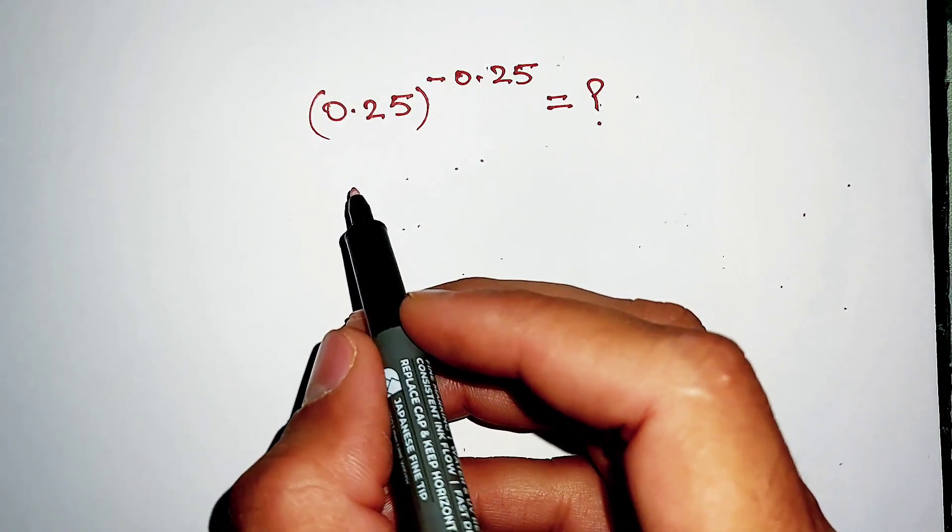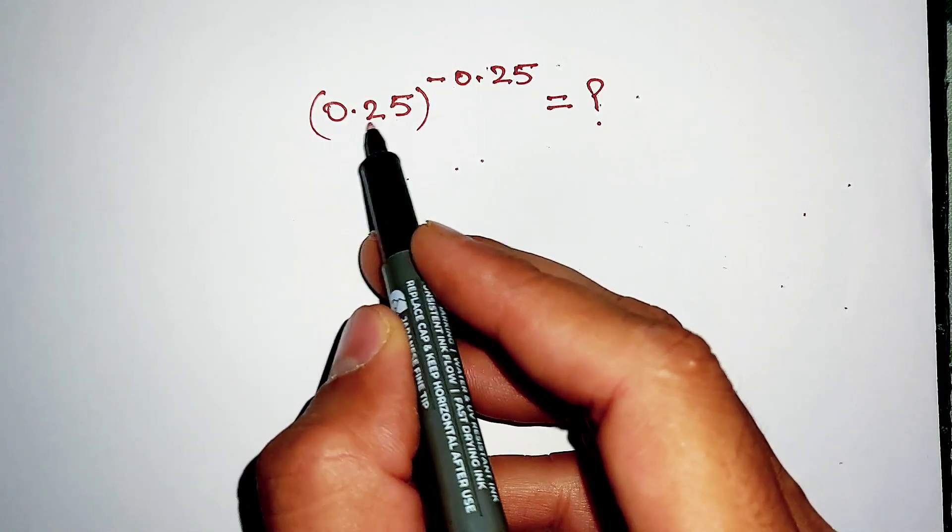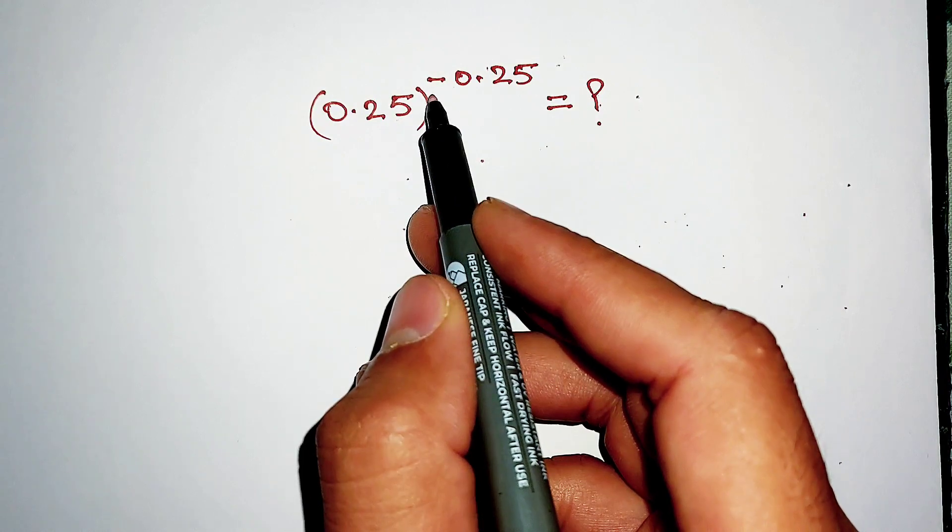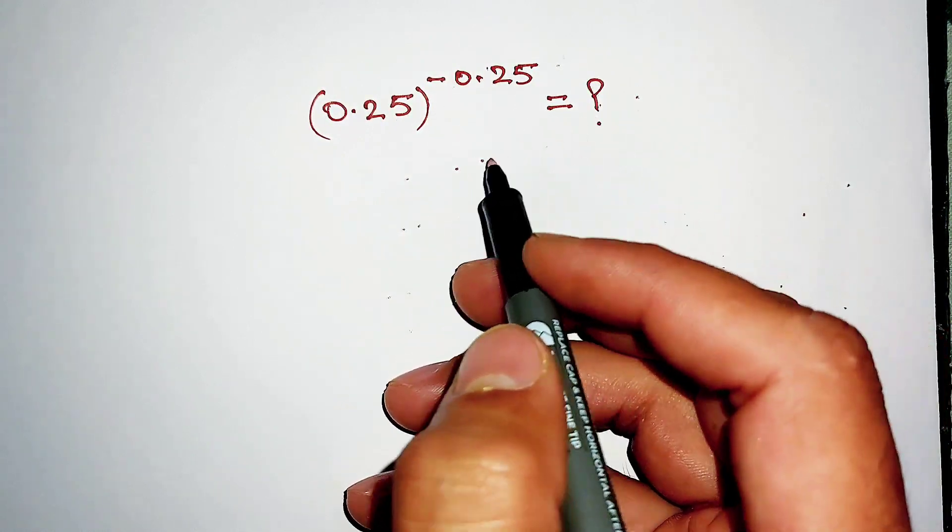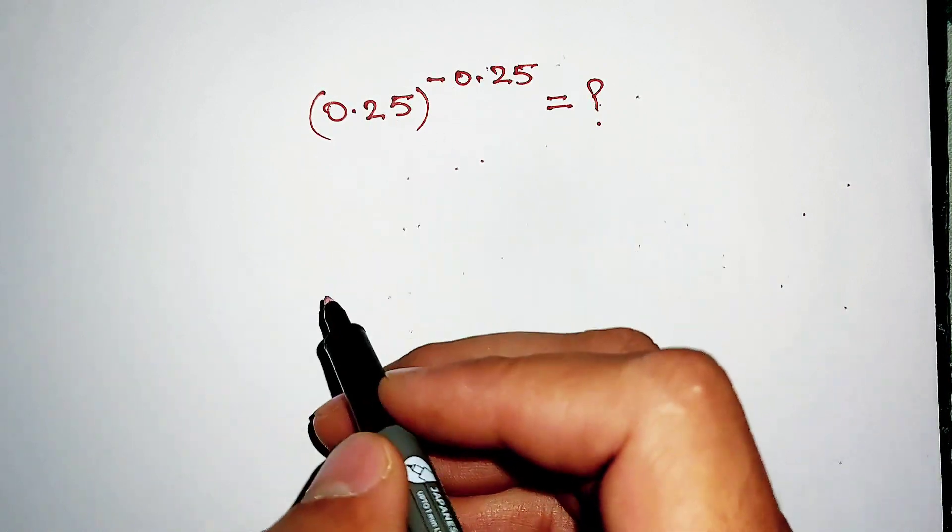Hello dosto, the question is (0.25)^(-0.25) equal to what? We have to simplify this question.